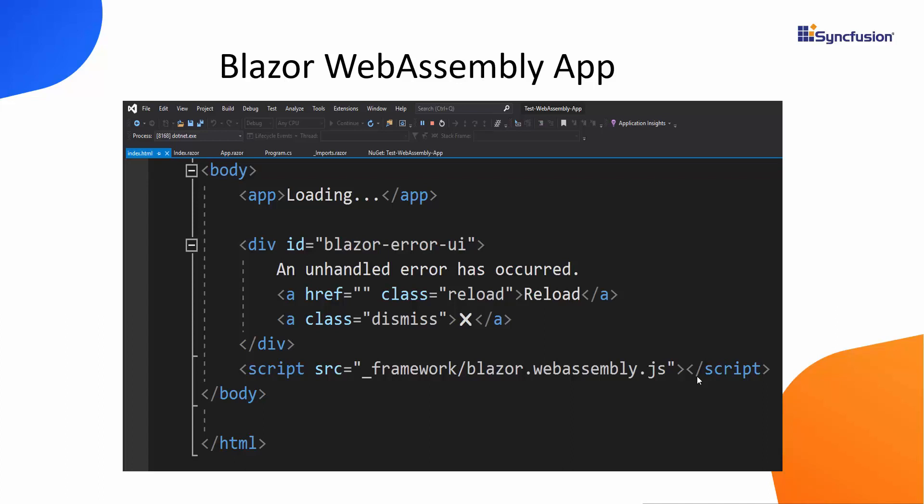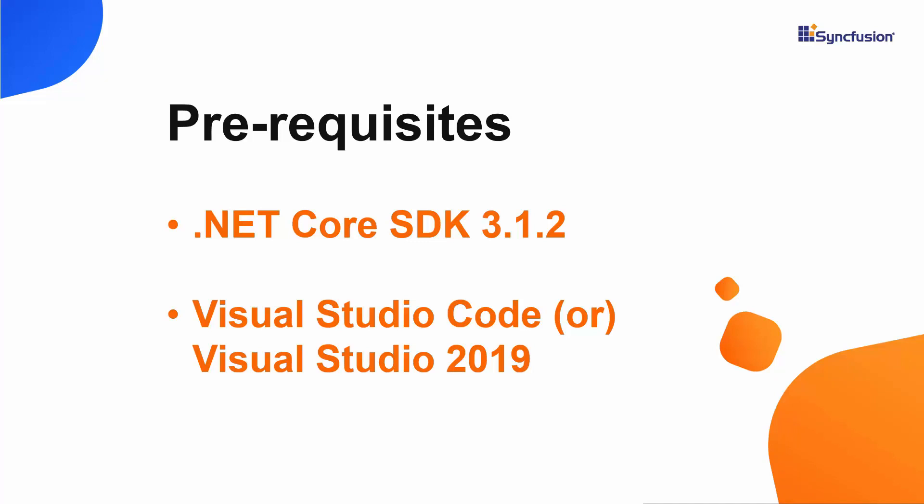Now let's create the first client-side Blazor WebAssembly app. For that, I need the .NET Core SDK 3.1 installed, and either Visual Studio Code or Visual Studio 2019. I'll start by creating the app using Visual Studio 2019, and later show you the same using Visual Studio Code.